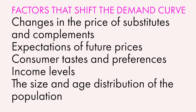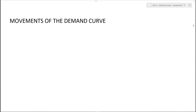You might ask what causes an increase or a decrease. The answer is factors other than price. A shift in the demand curve — where the demand curve moves to the right or to the left — is caused by factors such as changes in the price of substitutes and complements, expectations about future prices, consumer tastes and preferences, income levels, and the size of population and its age distribution. When these factors change, demand will change overall.